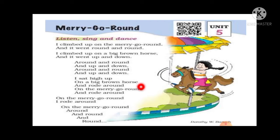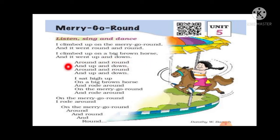First of all, I will sing the poem, then I will explain it. Merry-Go-Round: I climb up on the Merry-Go-Round, and it went round and round. I climb up on a big brown horse, and it went up and down, around and round, and up and down, around and round and up and down.